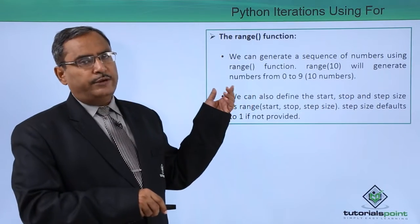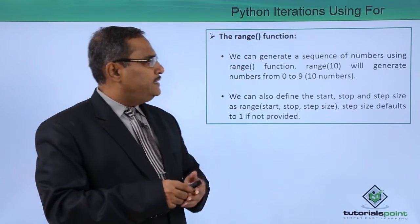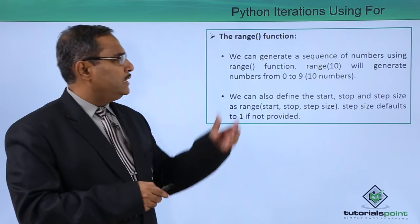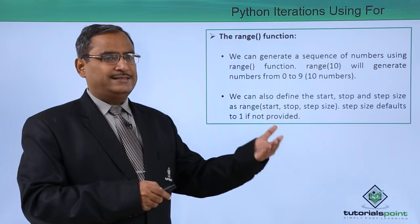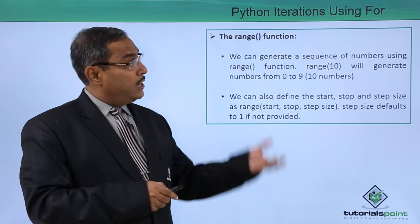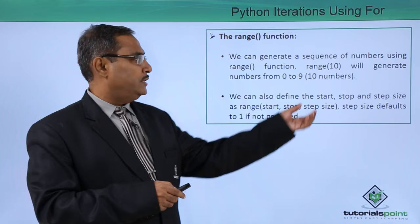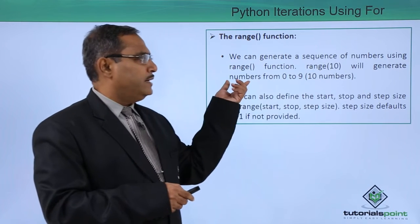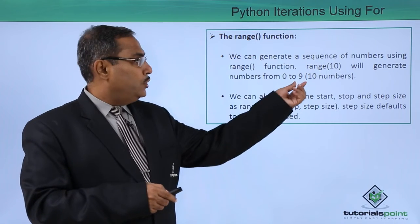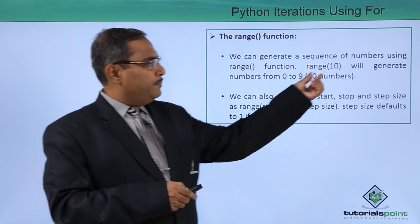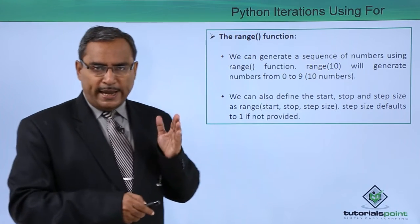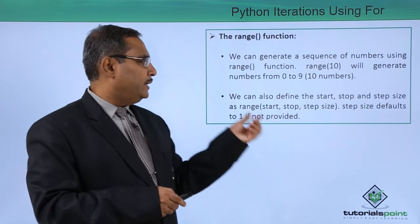We can also do this one using the range function. We can generate a sequence of numbers using range function. For loop can be operating on a certain sequence - there are iterable objects also using this range function. Range 10 will generate numbers from 0 to 9, that is the 10 numbers we are having here. Always remember here this 10 will not be inclusive. 0 to 9 that is the 10 numbers we are having.